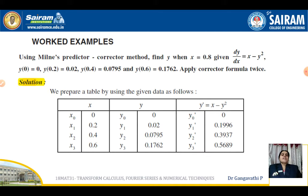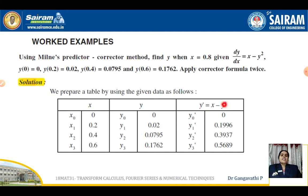y' = xy². So y₀' is evaluated at x₀ = 0, y₀ = 0, giving y₀' = 0. Then y₁' is y' evaluated at x₁ = 0.2 and y₁ = 0.02, giving y₁' = 0.1996.